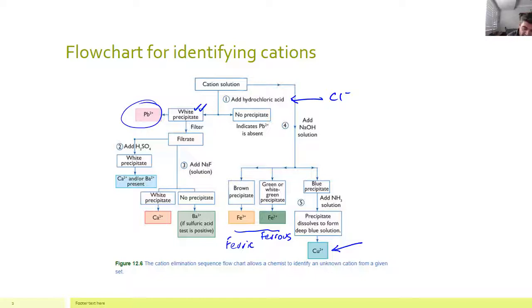If we then add sulfuric acid, what this is doing is it's adding sulfate ions. The sulfate ions are going to create a white precipitate. The problem with this white precipitate is we do not know whether or not it is calcium or barium.